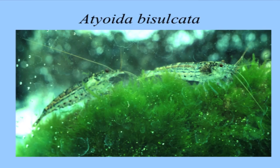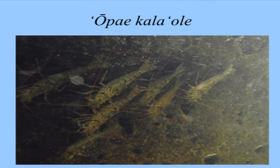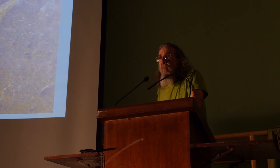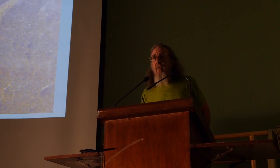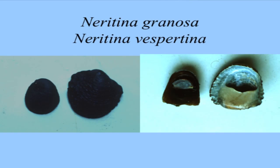Then we have a couple of endemic freshwater crustaceans. This Atyoida bisulcata is a little shrimp with the Hawaiian name Kala'ole. They occur in some streams in really large numbers and people like to eat them — you toast them up. If you go to a real party, a lot of times you'll be served these. They're very crunchy and tasty.